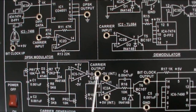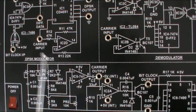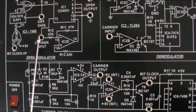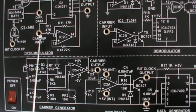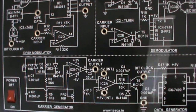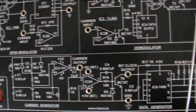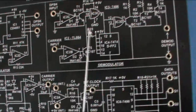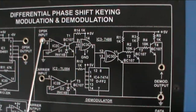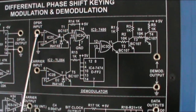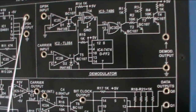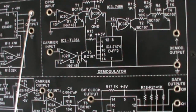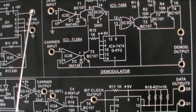We will connect this socket to the carrier input socket of the DPSK modulator. This is the output terminal. And this is the demodulator section. This is the input of DPSK and the DPSK output. This is the DPSK output terminal.